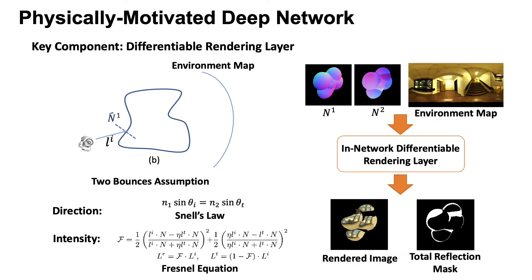Our geometry representation defines two normals n1 and n2 to be the surface normals on two-bounce refractive light paths. This representation allows us to implement an in-network differentiable rendering layer that models the full physics of two-bounce refraction and reflection. For appearances that can only be modeled by more than two bounces, our rendering layer will output a total reflection mask.